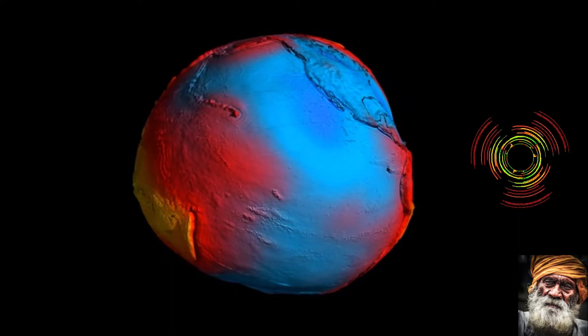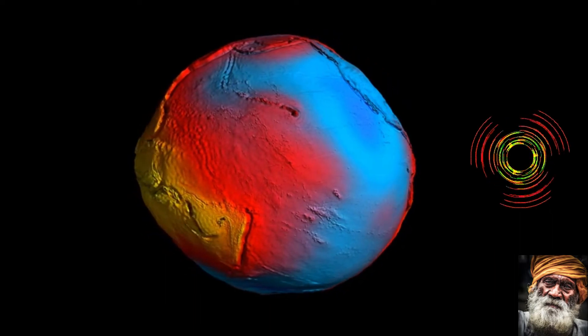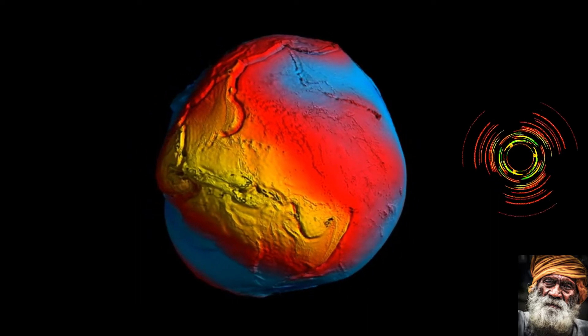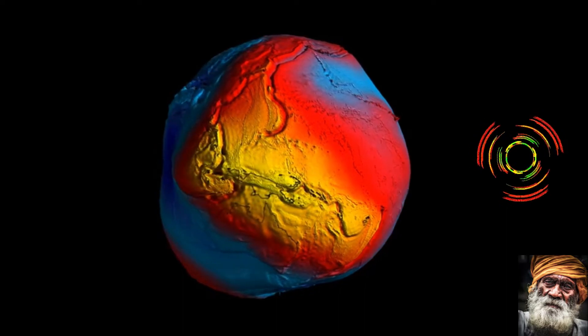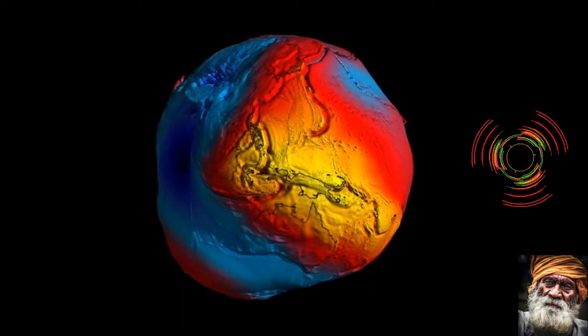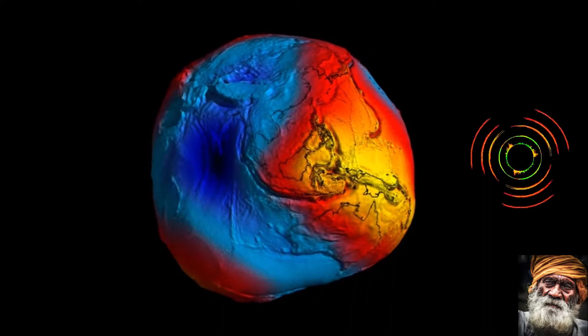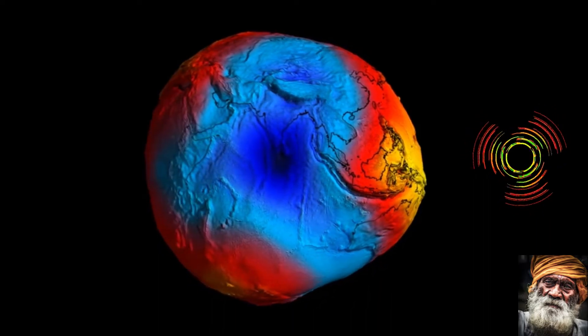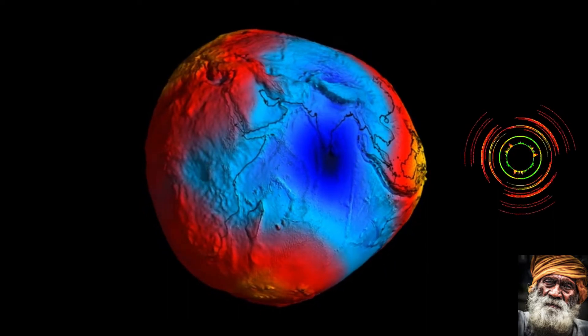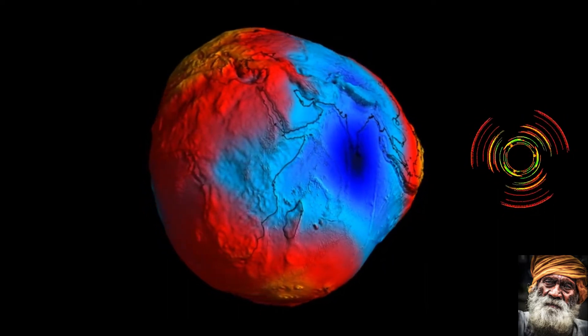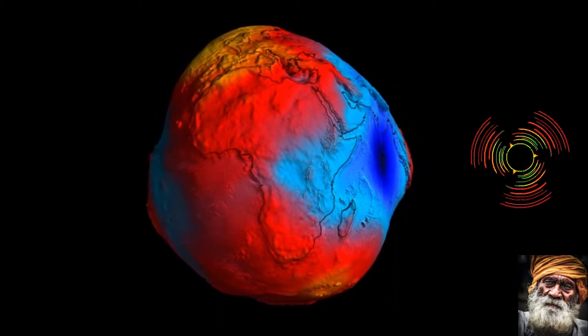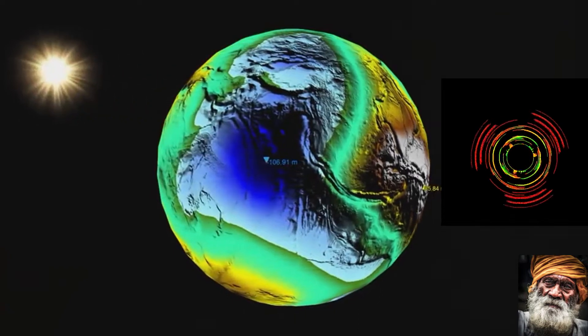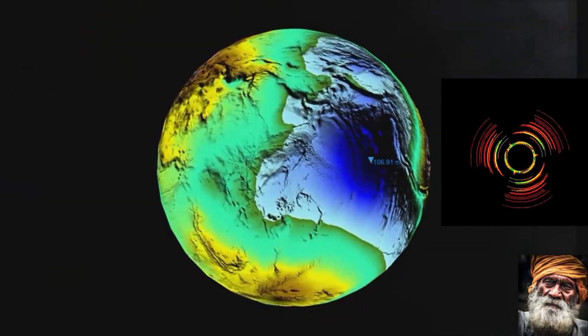To put it simply, the equatorial bulge and the effects of the surface centrifugal force due to rotation mean that the sea level gravity increases from about 9.780 meters per second squared at the equator to about 9.832 meters per second squared at the poles. So an object will weigh approximately 0.5 percent more at the poles than at the equator.